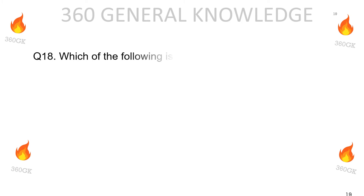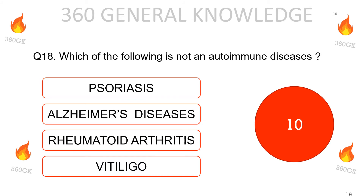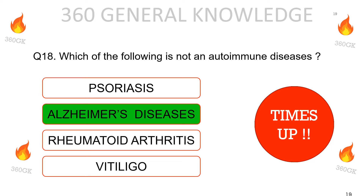Which of the following is not an autoimmune disease: psoriasis, Alzheimer's disease, rheumatoid arthritis, or vitiligo? The correct answer is Alzheimer's disease.